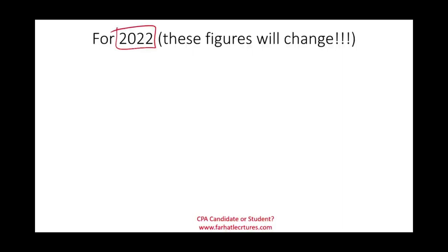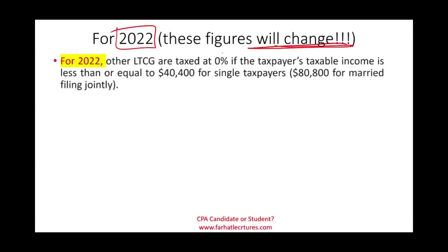For 2022, you pay 0% on long-term capital gains if your taxable income is $40,400 or less (single). If you're married filing jointly, the threshold doubles to $80,800. The government is saying: you bought an asset, held it more than a year, and if your income is below this threshold, you pay no tax on that long-term gain. Remember, this preferential rate only applies to long-term — short-term gains are still taxed at ordinary rates.